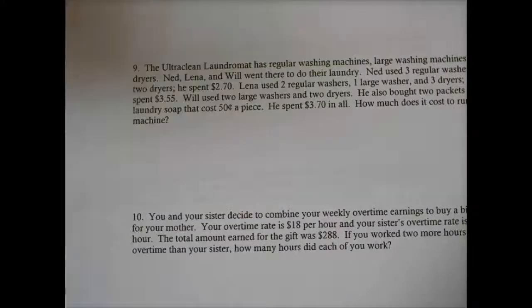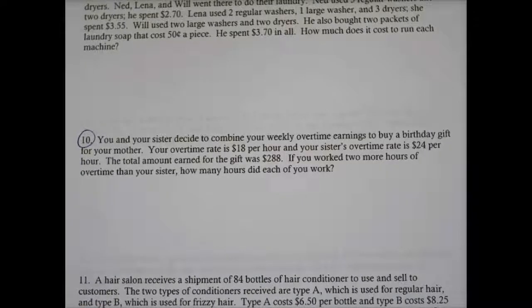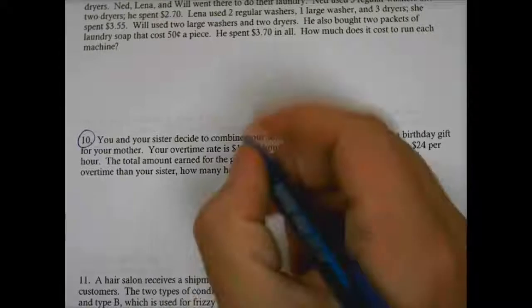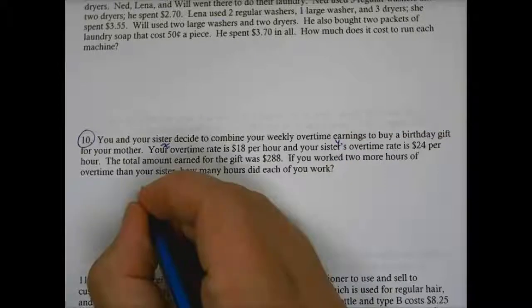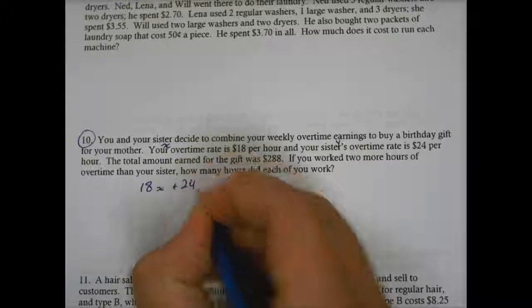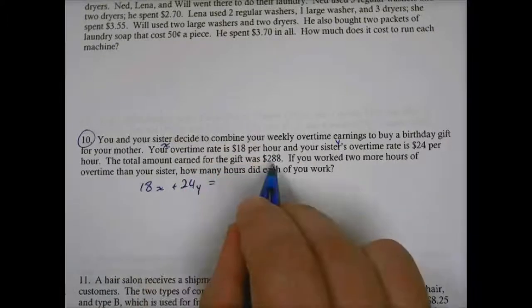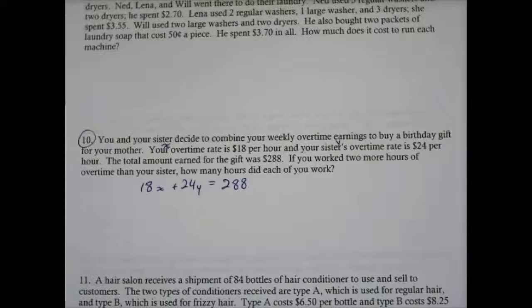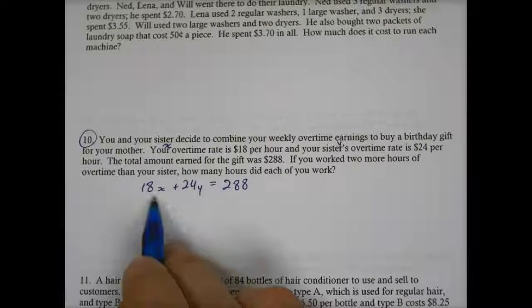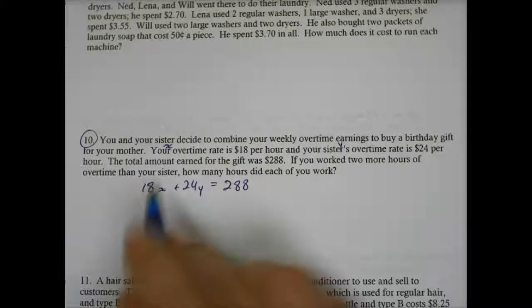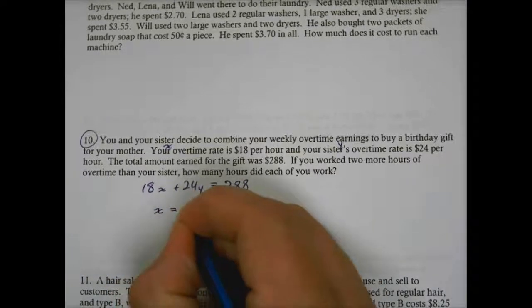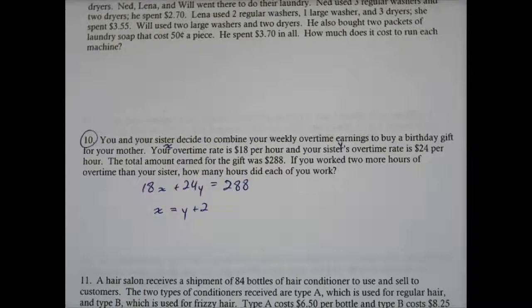Alright, let me find one real quick that has two variables. Alright, I'm looking at number 10 here. So it says, you and your sister decide to combine your weekly overtime earnings to buy a birthday gift for your mother. Your overtime rate is $18 an hour, and your sister's is $24 an hour. So let's call you X and your sister Y. So we know $18 per hour plus $24 per hour is supposed to be $288. The total amount earned for the gift is $288. If you worked two more hours than your sister, so X equals Y plus 2, how many hours did each of you work?